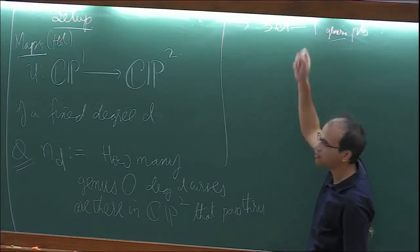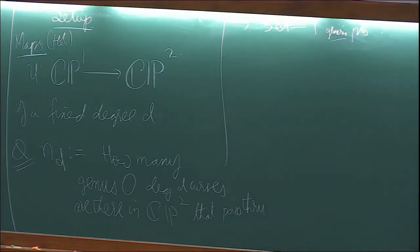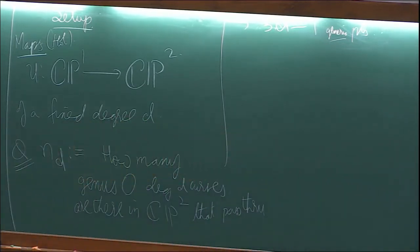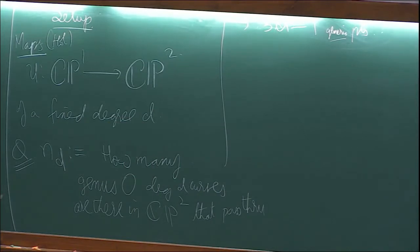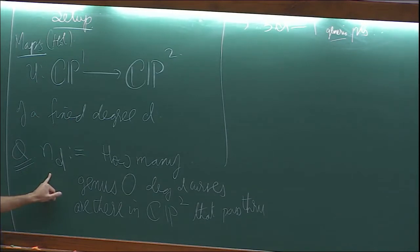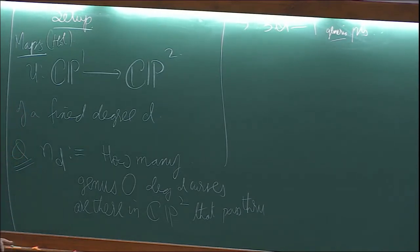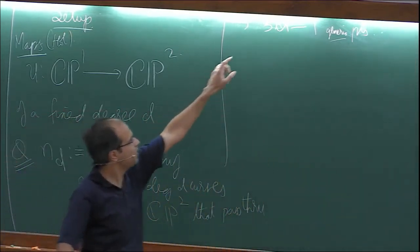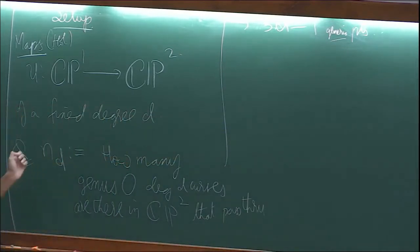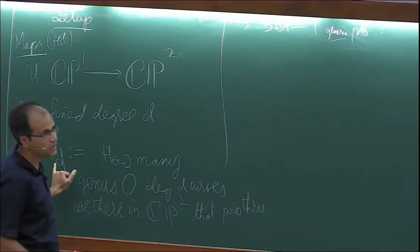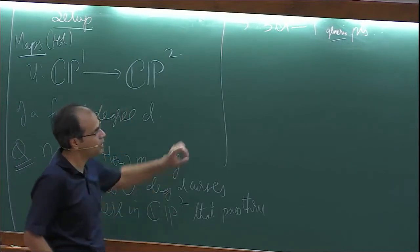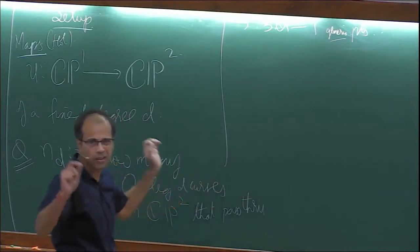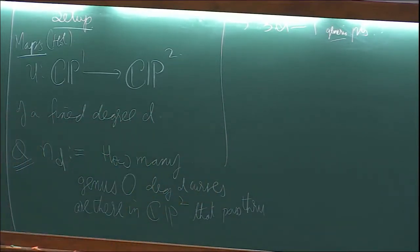Let me justify why 3D minus 1 is the correct number of generic points. For D equal to 2, I am asking how many conics are there through 5 generic points. You might know that for conics, 5 is the correct number of generic points.